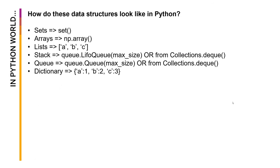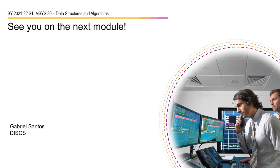Looking at Python implementations: sets use the native set() command; arrays use the NumPy library; lists are created using square brackets; stacks and queues can be created using the queue or collections library; and dictionaries are formed using curly braces. You can look up these different Python operations and test them to observe the behaviors we discussed today. That ends the module on elementary data structures — see you next meeting.